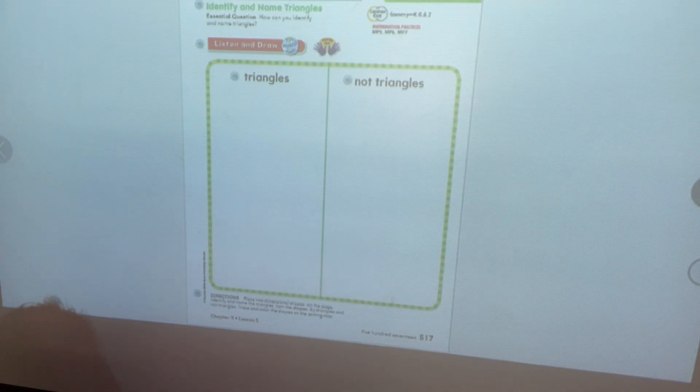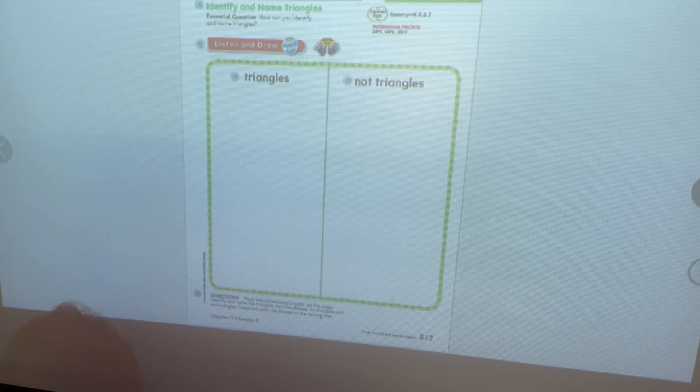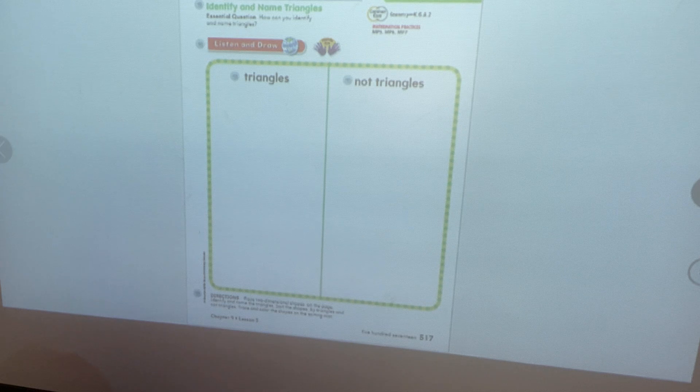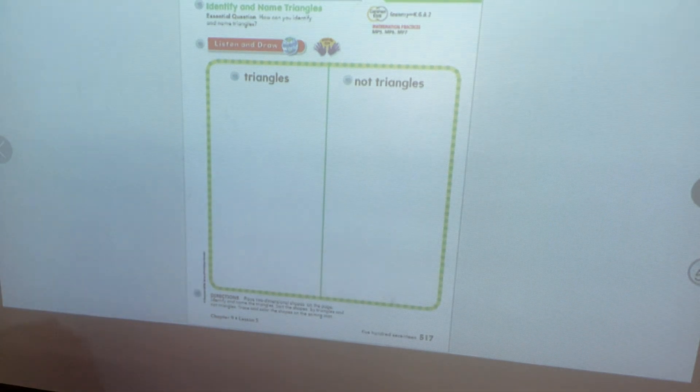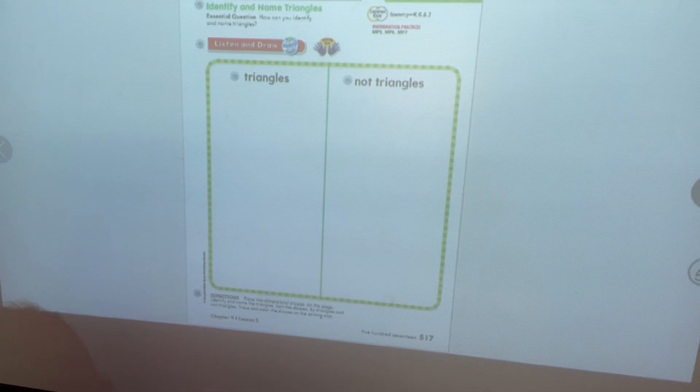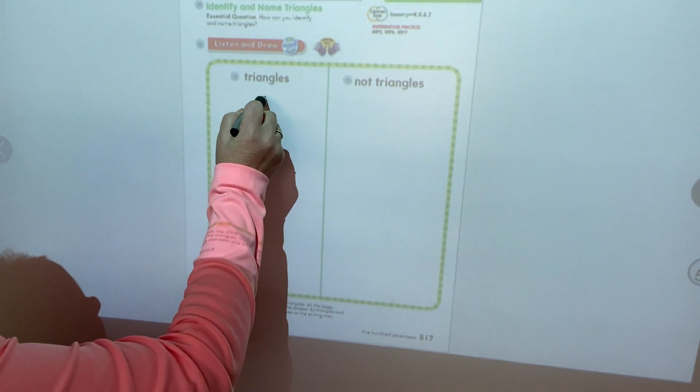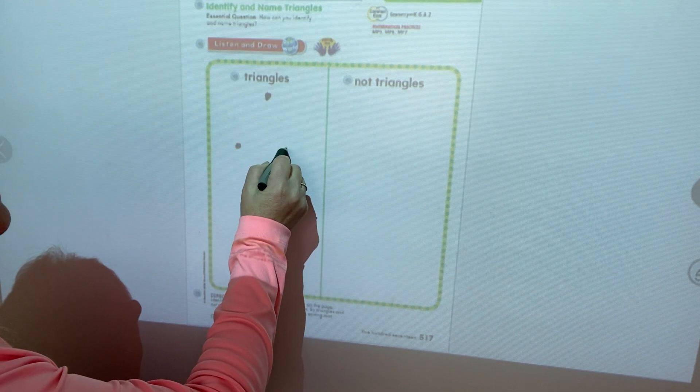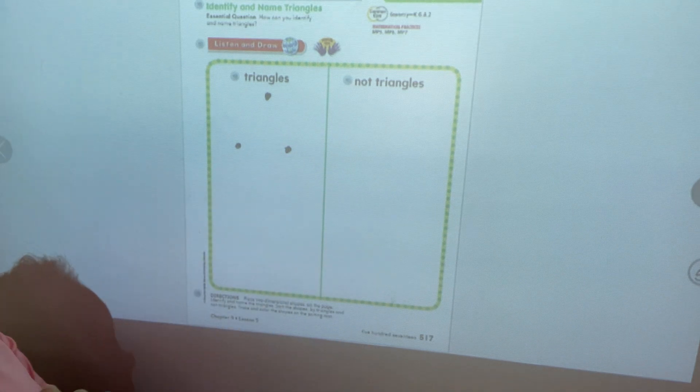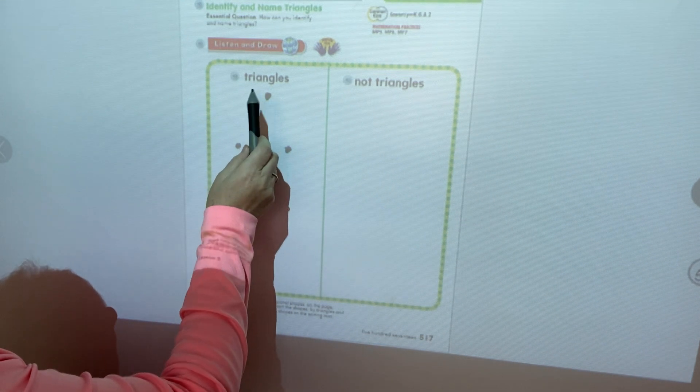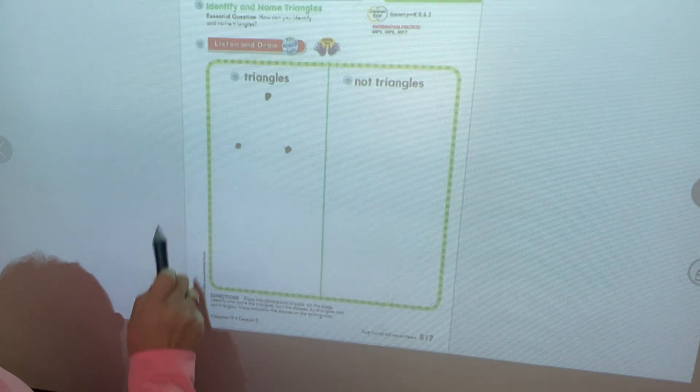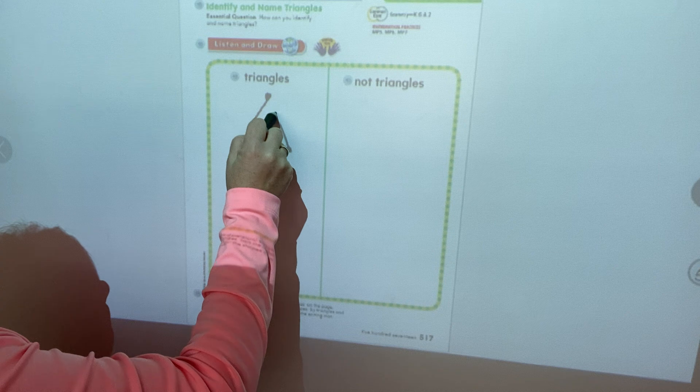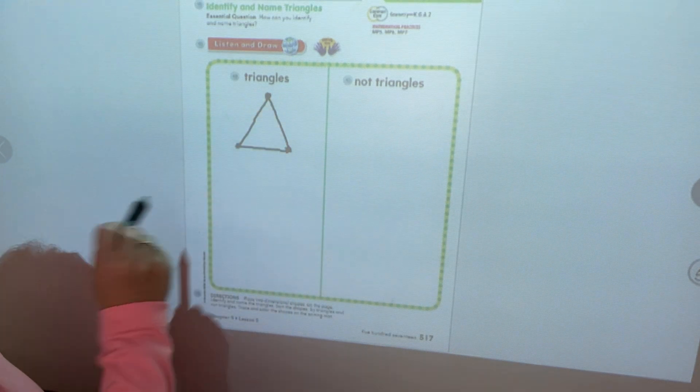In class we would be sorting shapes, but at home you guys are going to go ahead and we're just going to draw some. I want you to watch me draw a triangle. One of the easiest ways to do this when you're beginning to draw triangles I think is to draw some dots and mom or dad can help you if it's hard for you. So I draw one and then two and then you can connect those dots. One, two, and three. That is a triangle.